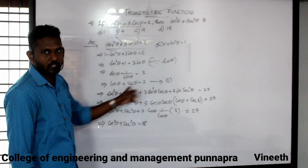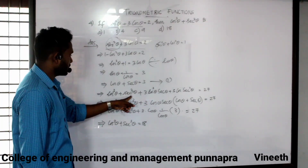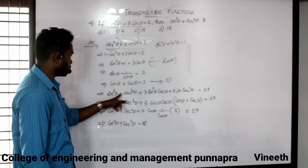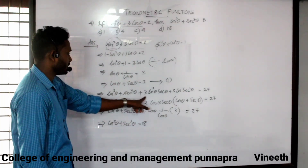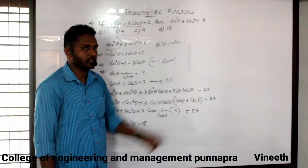A plus 3 is the whole cube, expanding: A cubed plus B cubed plus 3A squared B plus 3AB squared.